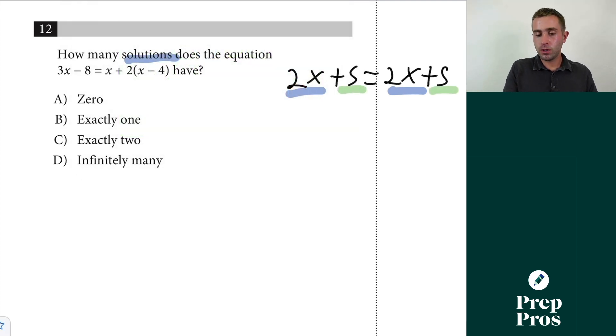Now if we have no solutions that's going to tell us that we're going to have something like this. We're going to have the same slope but we're going to have different intercepts. That's because it's going to be impossible for these two lines to ever intersect each other.